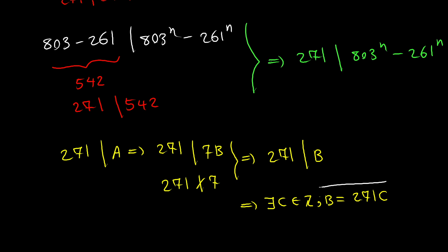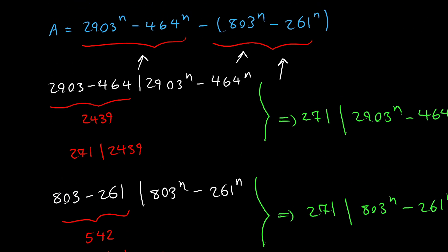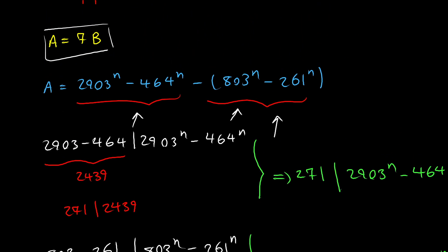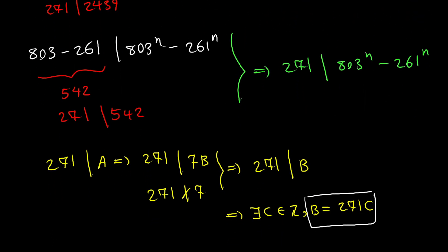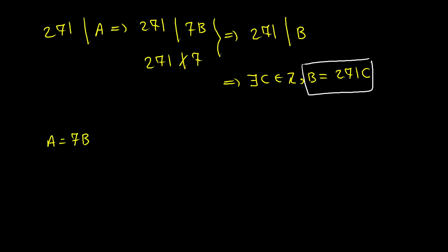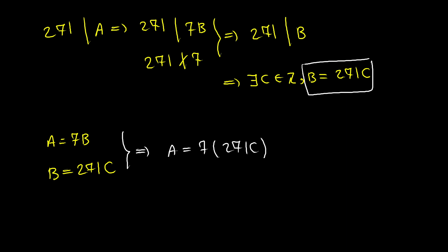So we have a equals 7 times b, and b equals 271 times c. Putting these two together, a equals 7 times 271 times c, which equals 1897 times c. So a is a multiple of 1897, meaning 1897 divides a.